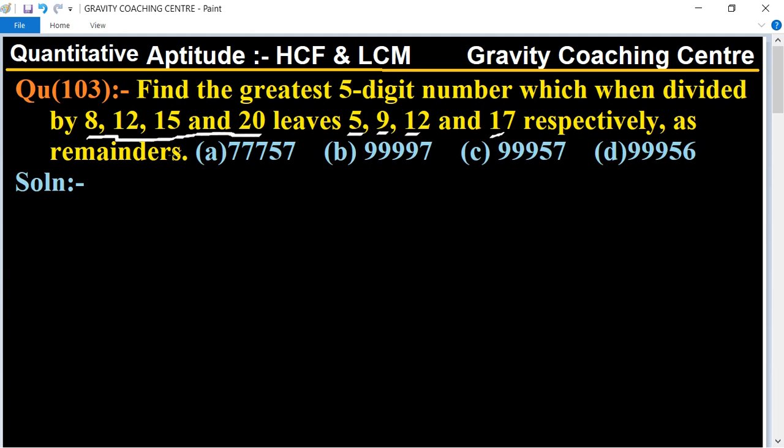So first of all, we find the difference of the numbers and their remainders. So 8 minus 5 equal to 3, and 12 minus 9 equal to 3, and 15 minus 12 equal to 3, and 20 minus 17 equal to 3.